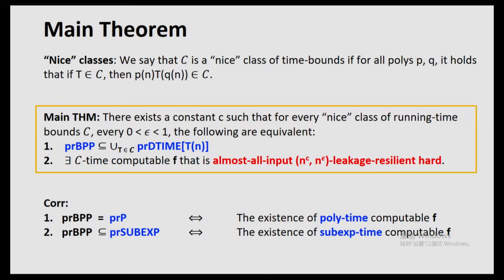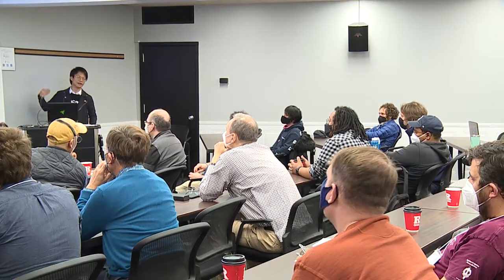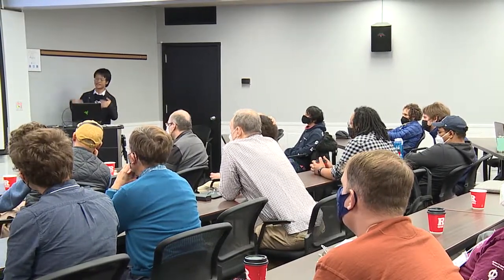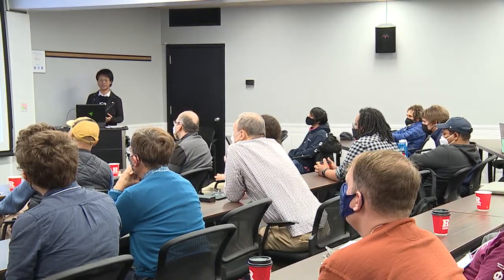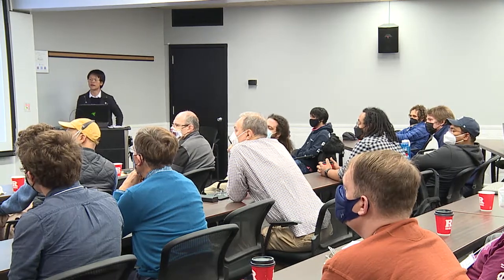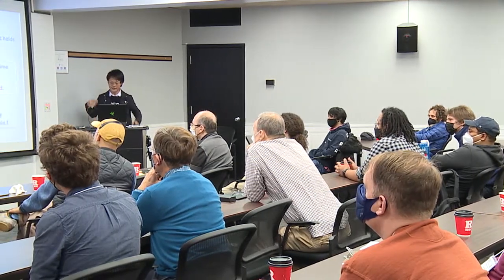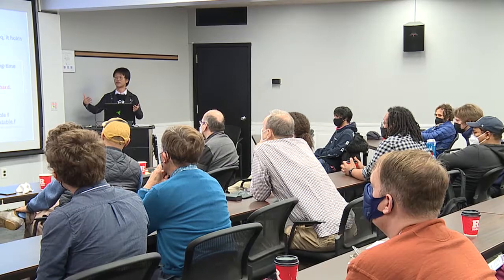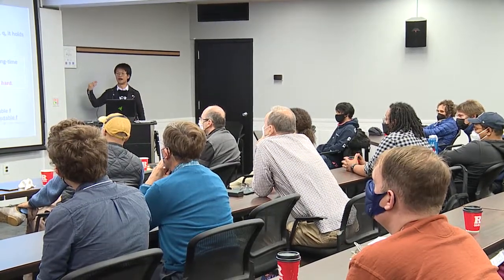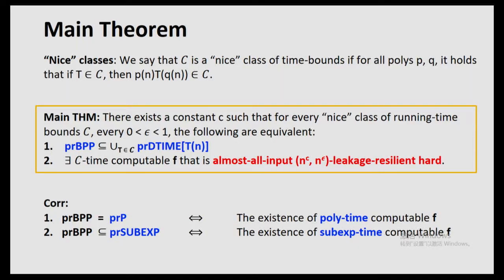Here we look at the notion of a 'nice class.' We say C is a nice class of running time bounds if, for all polynomials P and Q, if T is in the class, then P(T(Q(·))) is also in the class. This roughly captures the intuition that polynomial blow-ups are not so bad, and a polynomial blow-up of T should still remain in the class. Our main theorem says: there exists a constant C (very likely just three) such that for every nice class of running time bounds C and any constant epsilon in (0,1), the following are equivalent: (1) BPP is in deterministic time C, and (2) there exists a C-time computable function F that is almost-all-input leakage-resilient hard with respect to n^3-time attackers and n^epsilon amount of leakage.